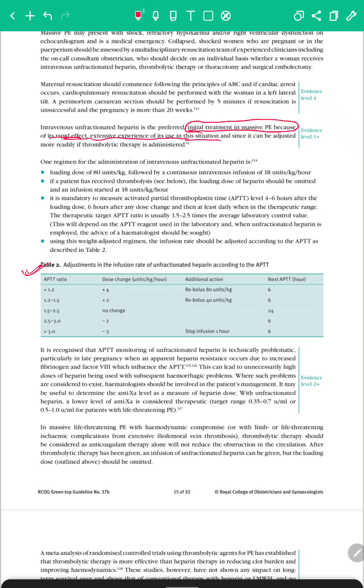Because in case we are using thrombolytic therapy, which is mostly in cases where there is limb compromise or life-threatening ischemic complications from extensive iliofemoral vein thrombosis. In these circumstances, thrombolytic therapy may be considered first, following which we need to give unfractionated heparin. So in these cases, unfractionated heparin is the preferred drug of choice.